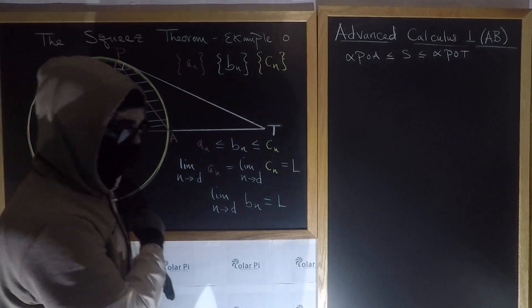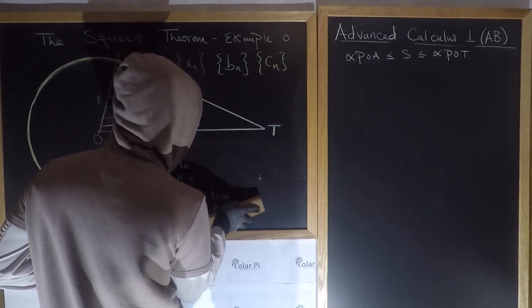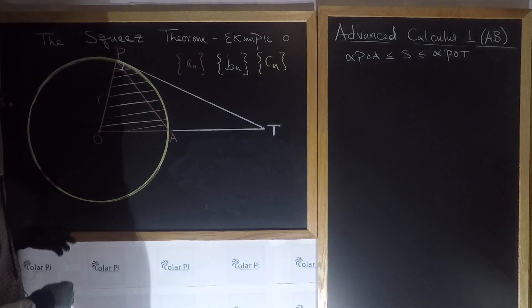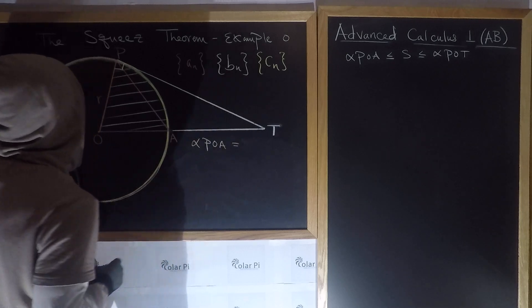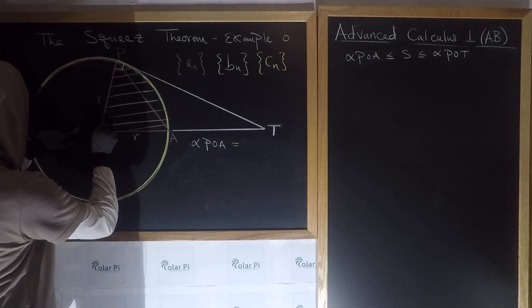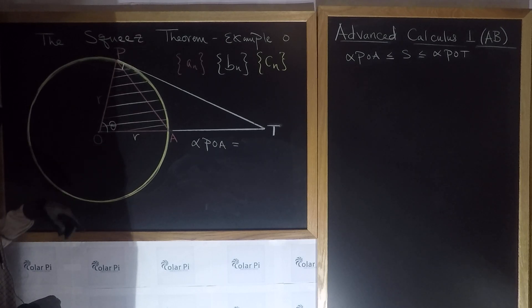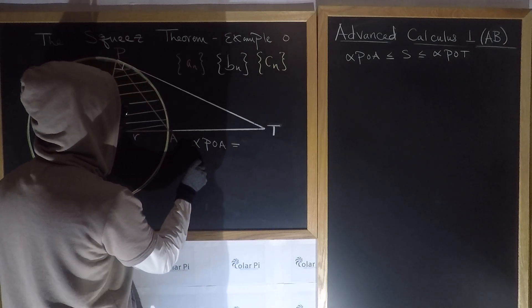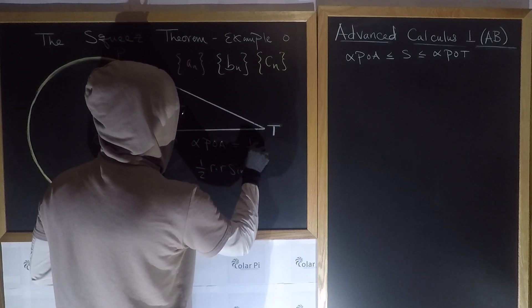Let's figure out the area of triangle POA and triangle POT, and also the area of the sector. For the area of triangle POA, if we use the formula that says area equals one-half times one side times another side times sine of the angle between them — that one-half AB sine theta formula — then the area of triangle POA is clearly equal to one-half R times R times sine theta, which is one-half R squared sine theta.